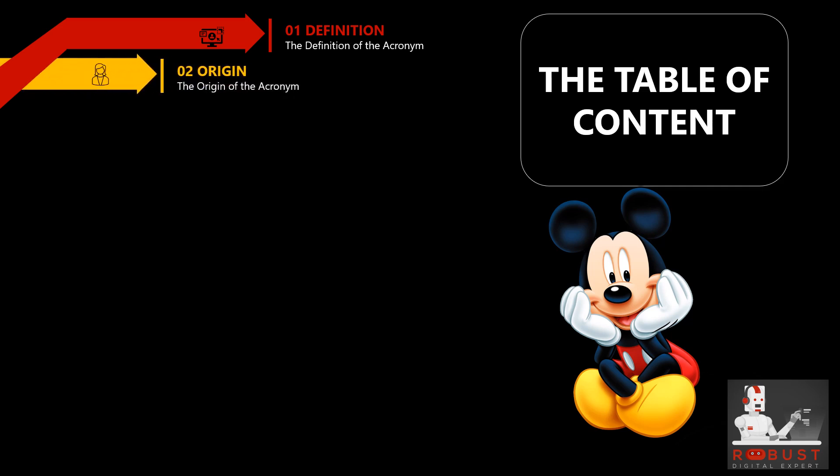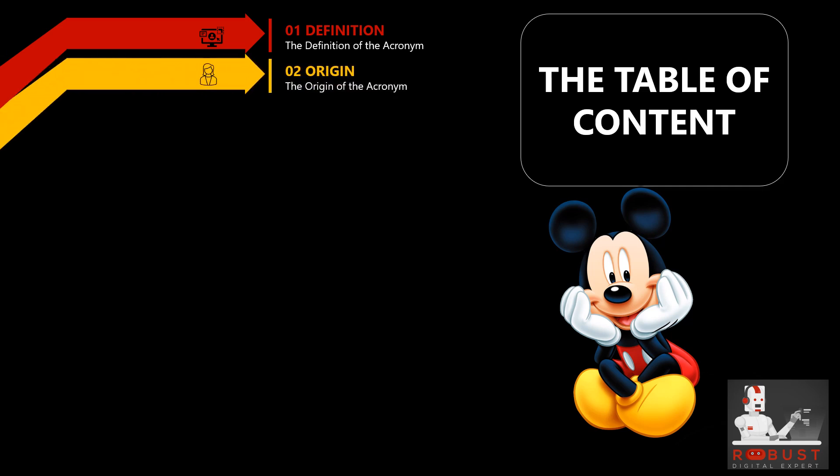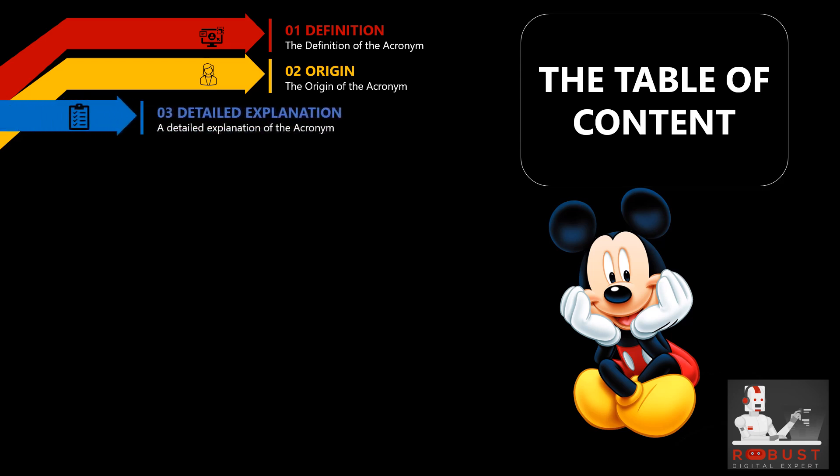Origin — we delve into the origin or source of the acronym, providing pertinent background information and historical context. This aids you in understanding the emergence of the acronym. Detailed explanation — we unpack the acronym, meticulously breaking it down into its constituent parts, elaborating on the meaning behind each element and exploring specific terminology and associated concepts.